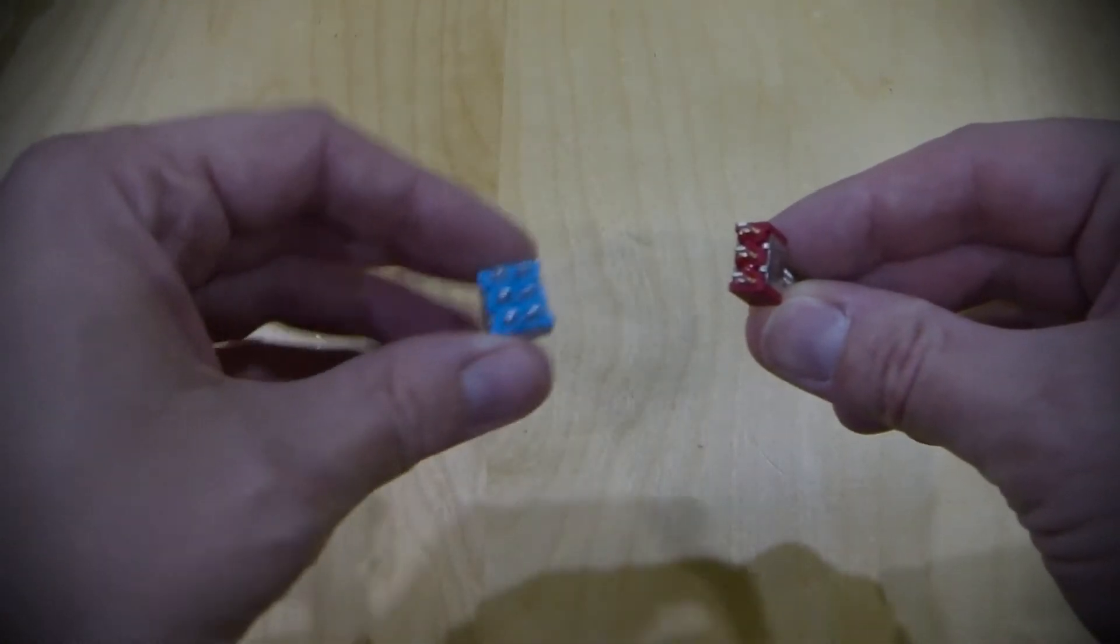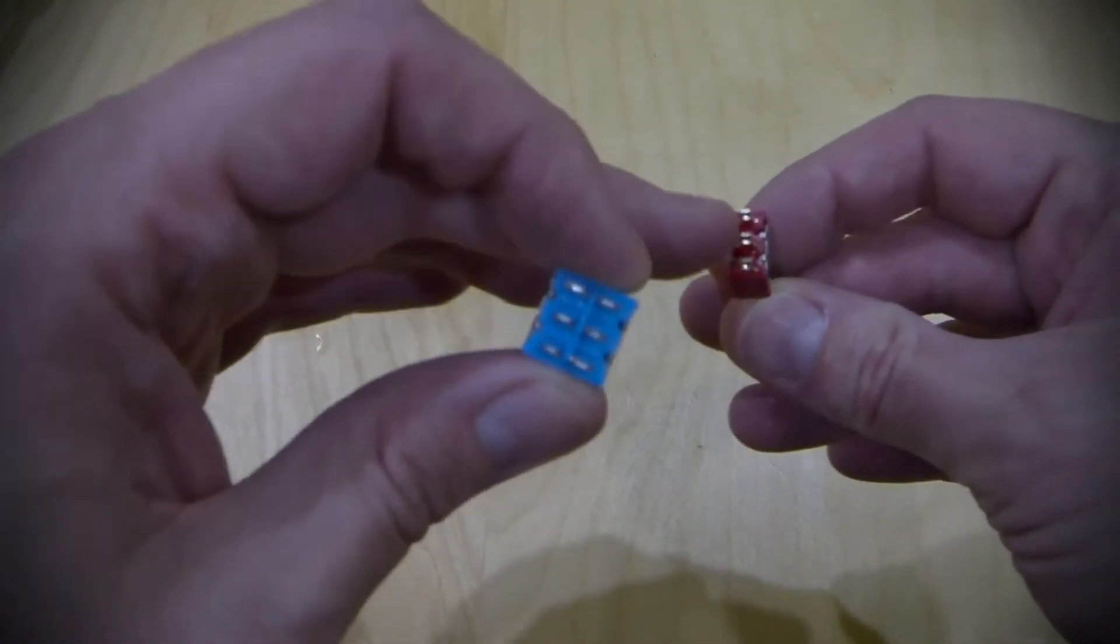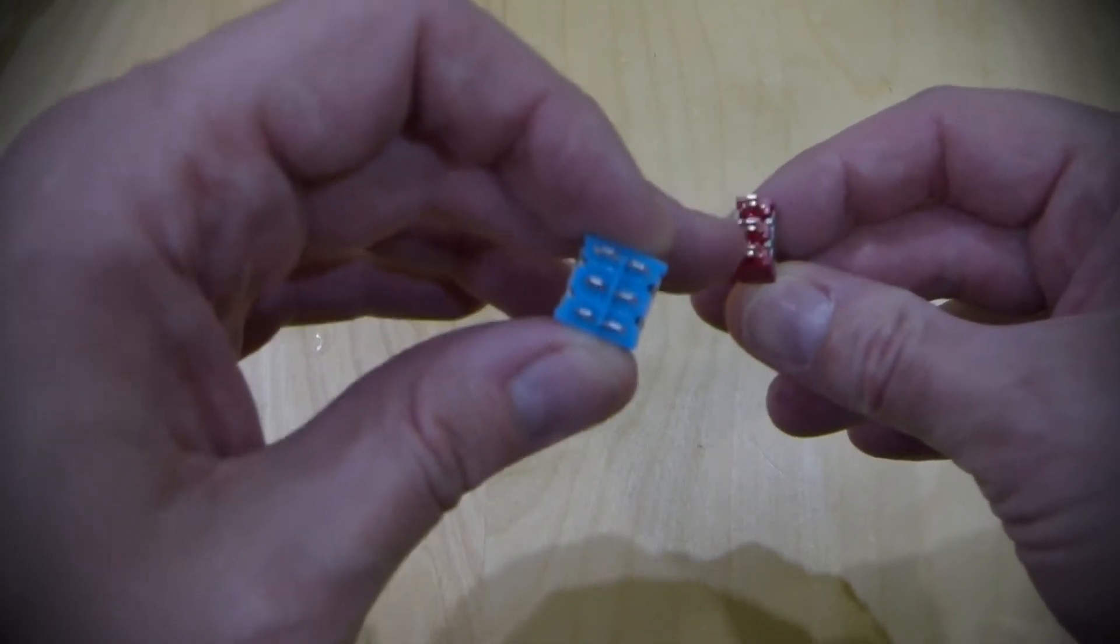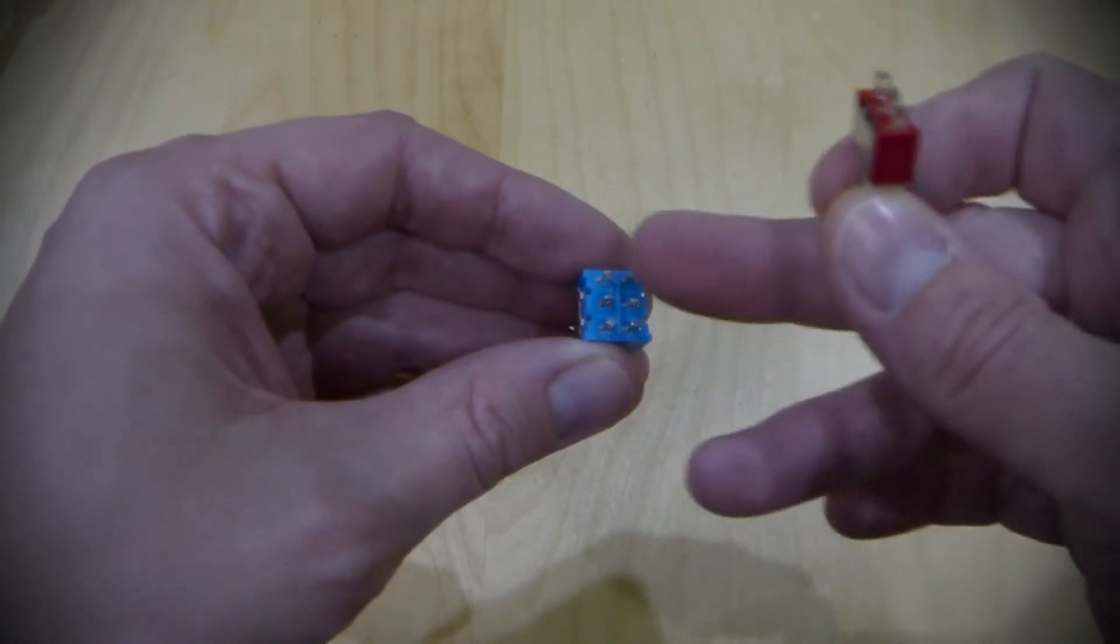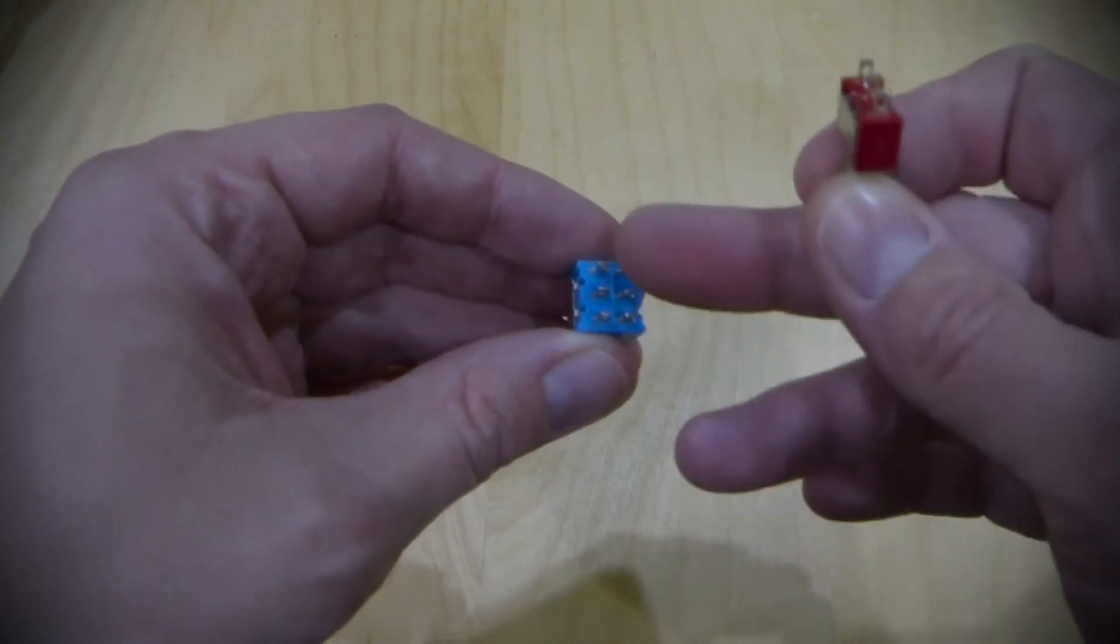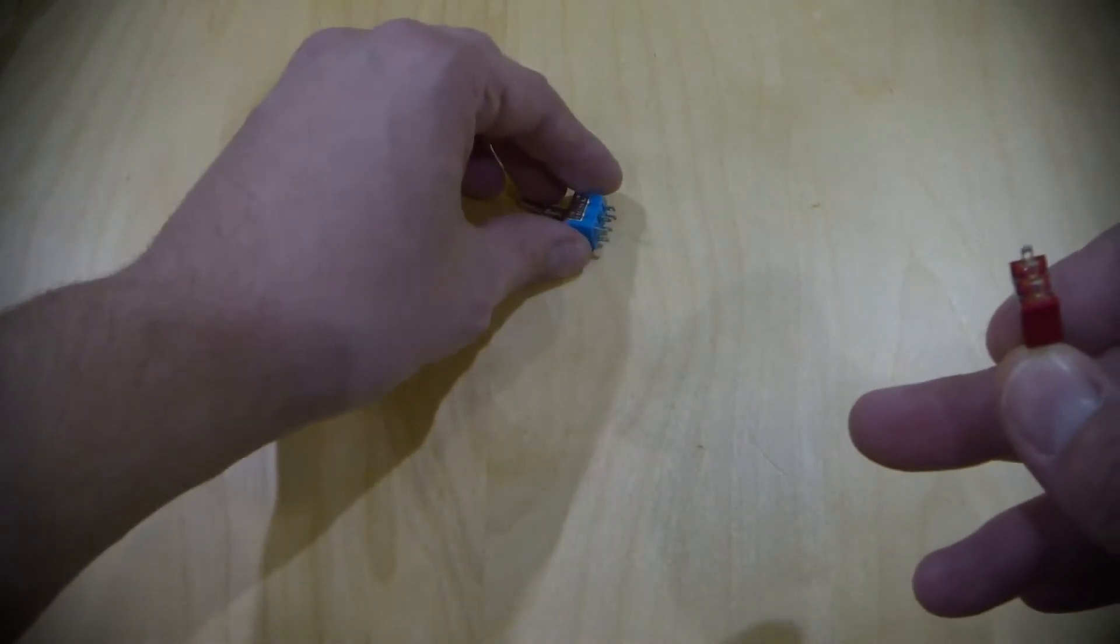This is a single pole. This is a double pole. You can see that this has three pins, which is one circuit that's being switched. This one has six pins, which the two rows are two different circuits being switched. So that's what the poles mean.